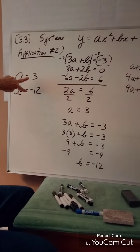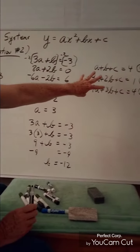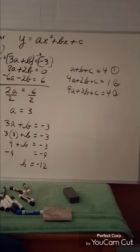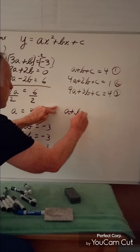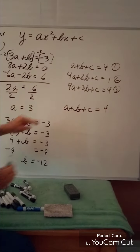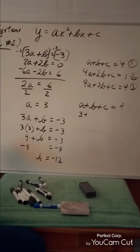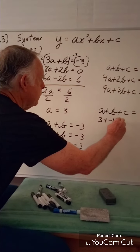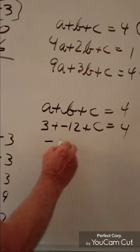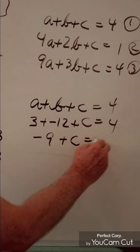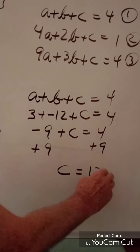With a and b identified, we can find c. Using the first original equation a + b + c = 4: substitute a = 3 and b = -12, giving 3 + (-12) + c = 4, so -9 + c = 4, and c = 13.